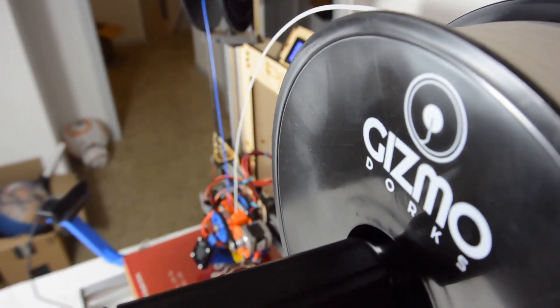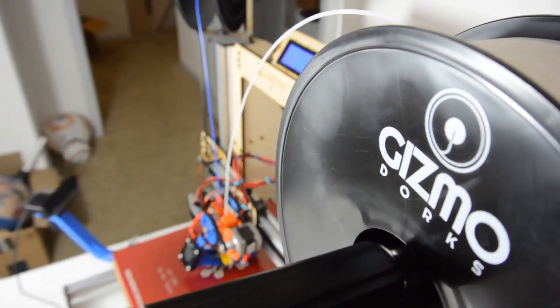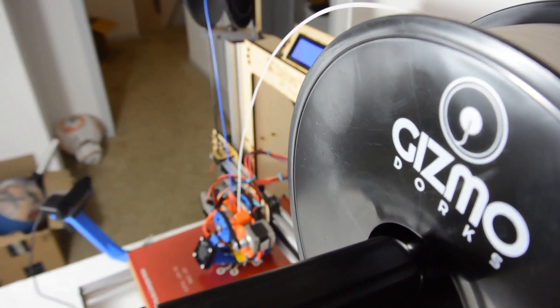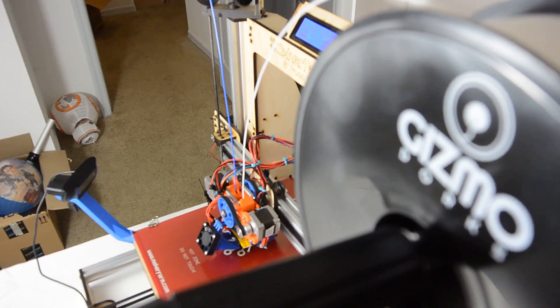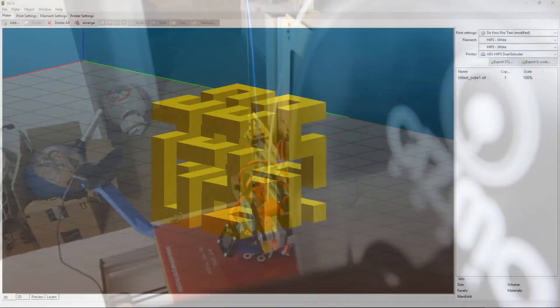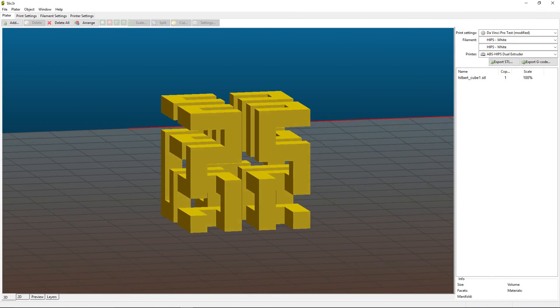Hey everyone, and welcome back to Hoffman Engineering. Today, we are going to be doing some 3D printing with dissolvable support material, namely high-impact polystyrene, or HIPS filament.